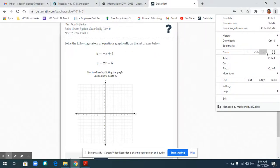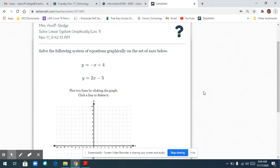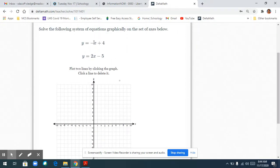Hi, I want to show you how to do the solving systems by graphing assignment on Delta Math. You're going to graph these lines like you did in the last assignment, but instead of graphing one line on the graph, you're going to graph two on the same graph.